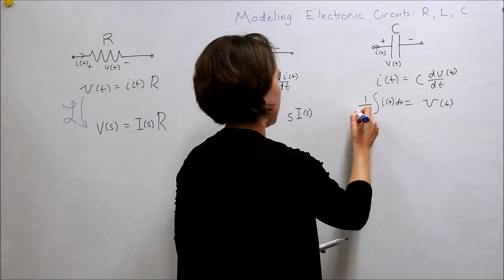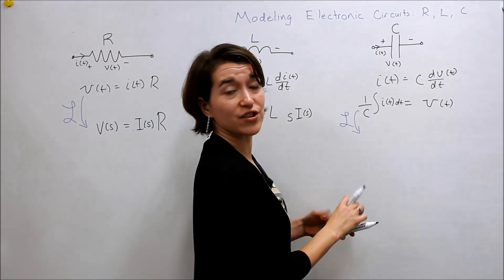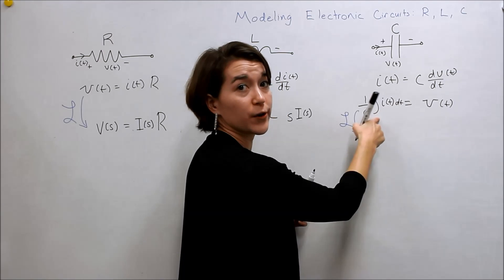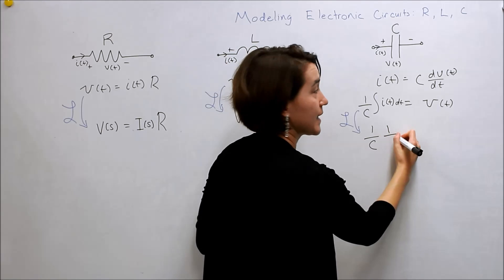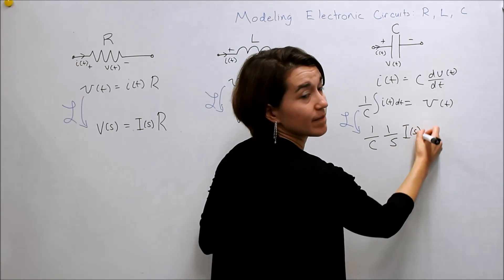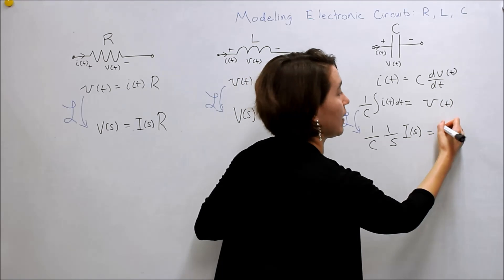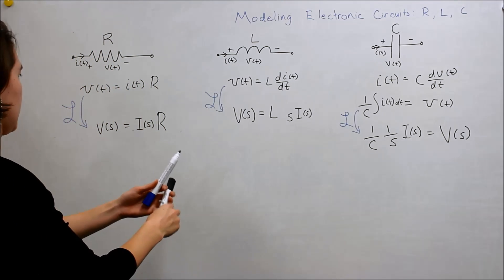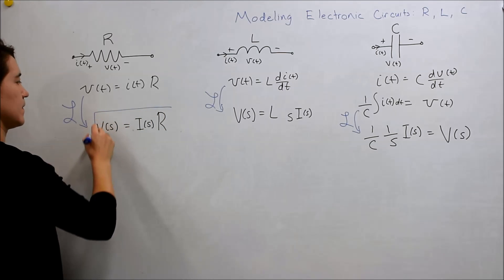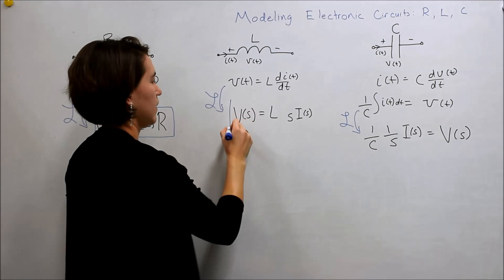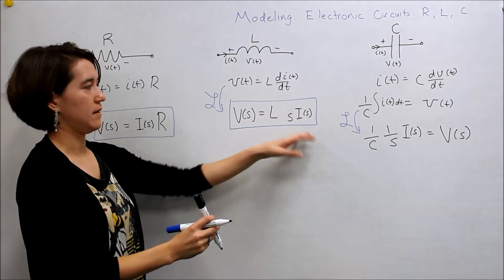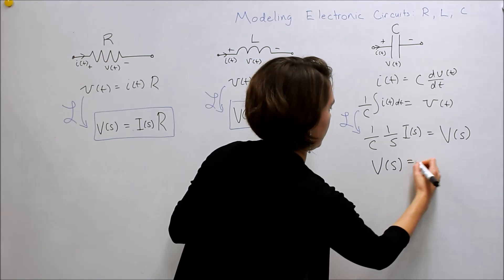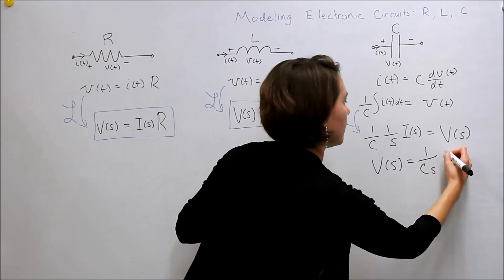We're going to do the same thing for the capacitor. Our constant will be the same. Here we're going to look up the table for the integral, and it's going to be 1 over S times I of S. And on this side we again have V of S, giving us V of S equals (1/Cs)·I of S.